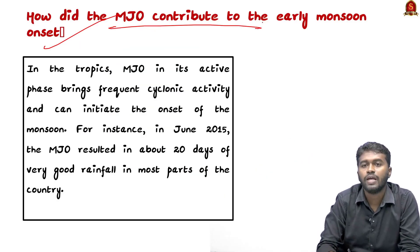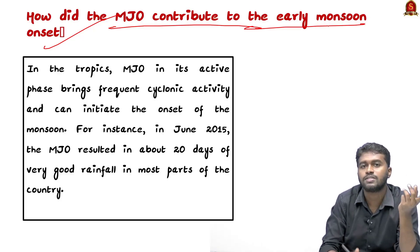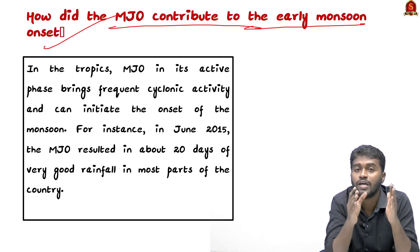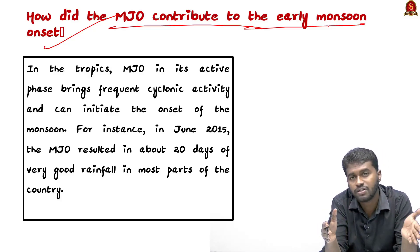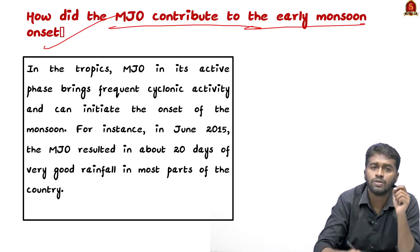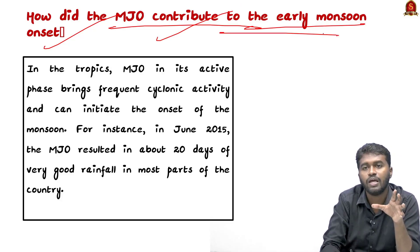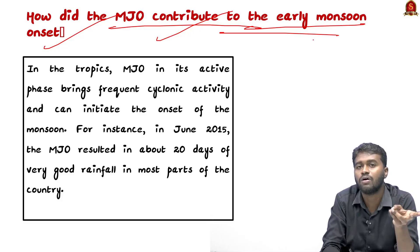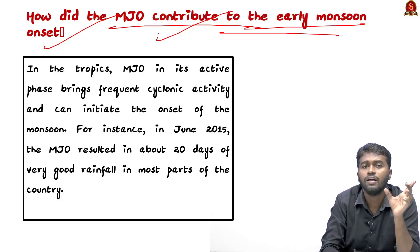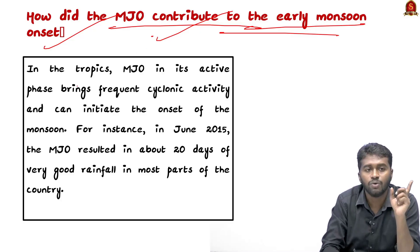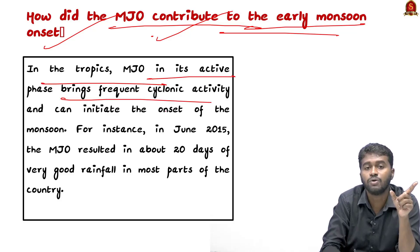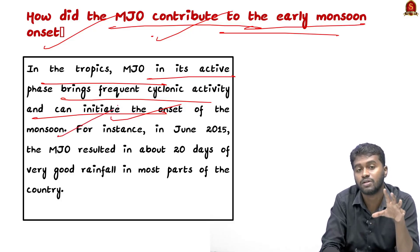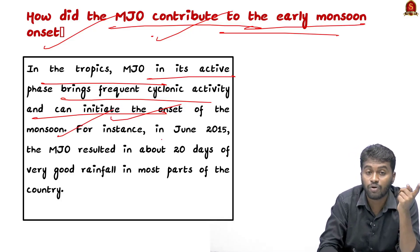How did the Madden-Julian Oscillation contribute to the early onset of the monsoon? When active over a region, it produces heavy rainfall; when inactive, only suppressed rainfall. The major features of the MJO are heavy convection, increased cloud formation, and cyclonic activity. In the tropics, when the MJO is in its active phase, it brings frequent cyclonic activity, which can initiate the early onset of the monsoon. This is the primary reason behind the early onset of the monsoon in 2025.